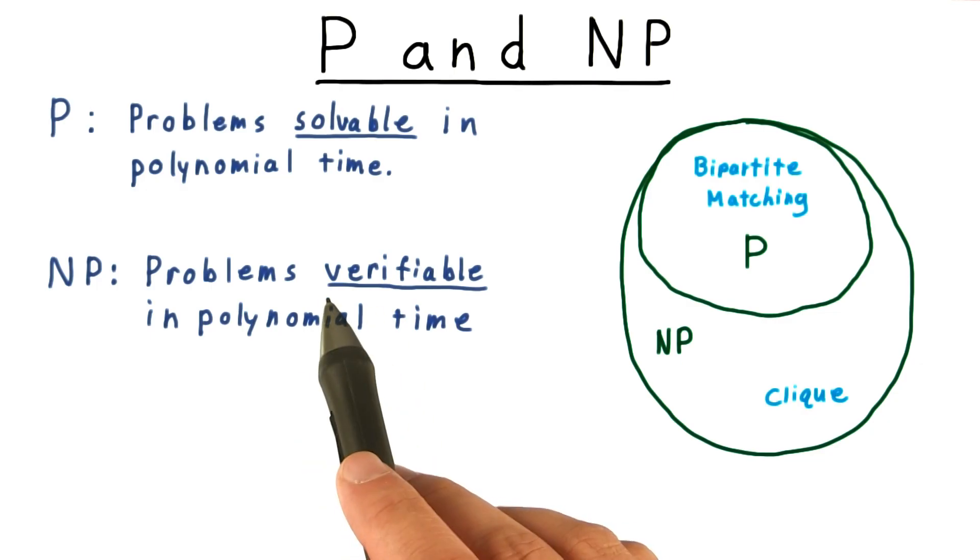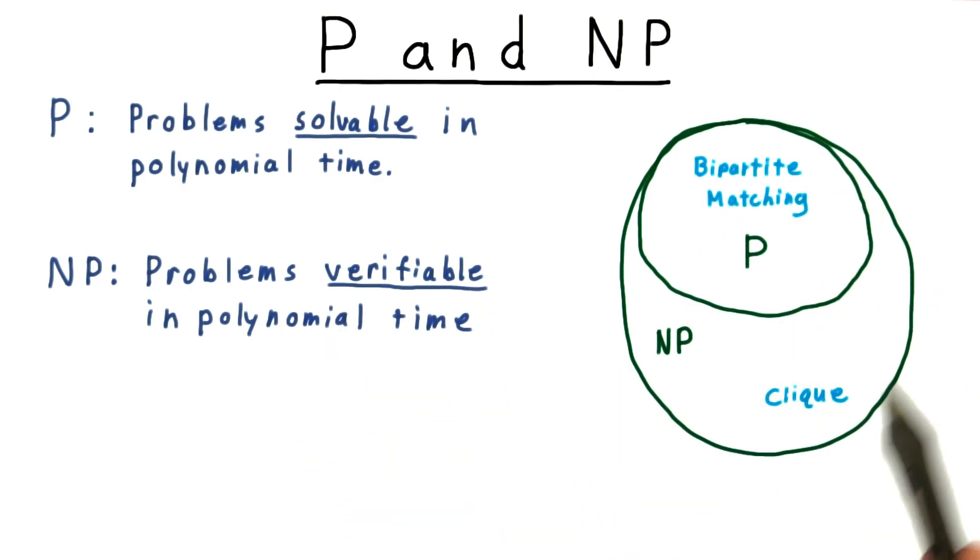NP, we define as the class of problems verifiable in polynomial time. This includes everything in P, since if a problem can be solved in polynomial time, a potential solution can be verified in that time too. Most computer scientists strongly believe that this containment is strict.